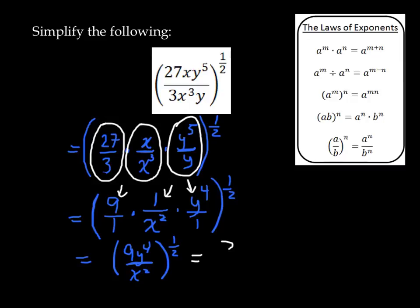The square root of 9 is 3. The square root of y to the power of 4 is y squared. And the square root of x squared is x. And so we're done.